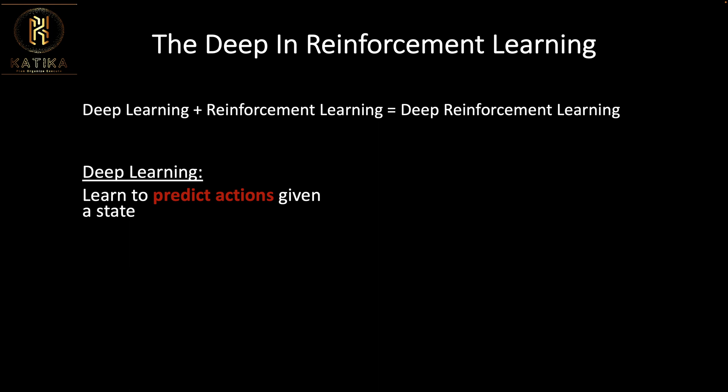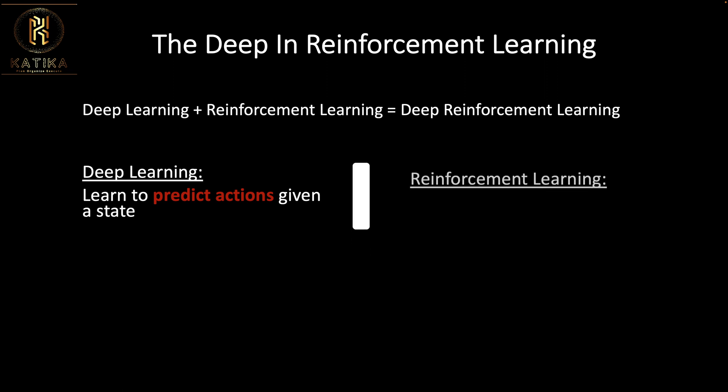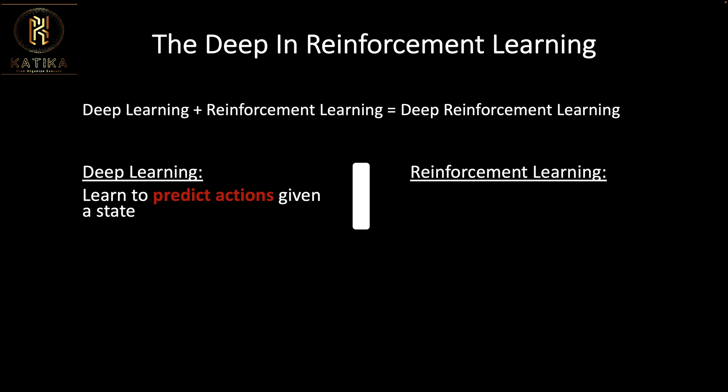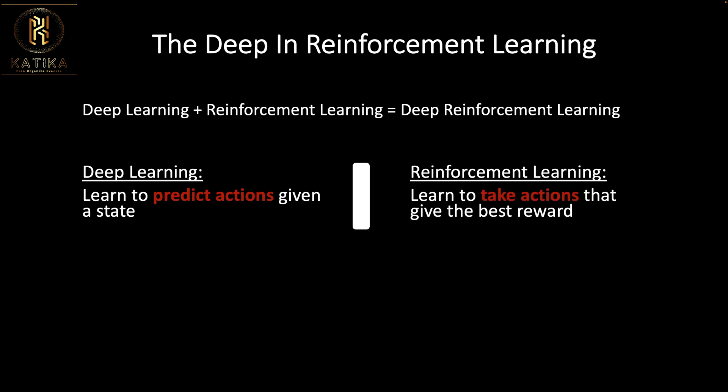Deep learning in this framework handles prediction. Then reinforcement learning comes in — once actions have been predicted, reinforcement learning tells us what decision to actually take. We learn to take actions that give us the best outcome.